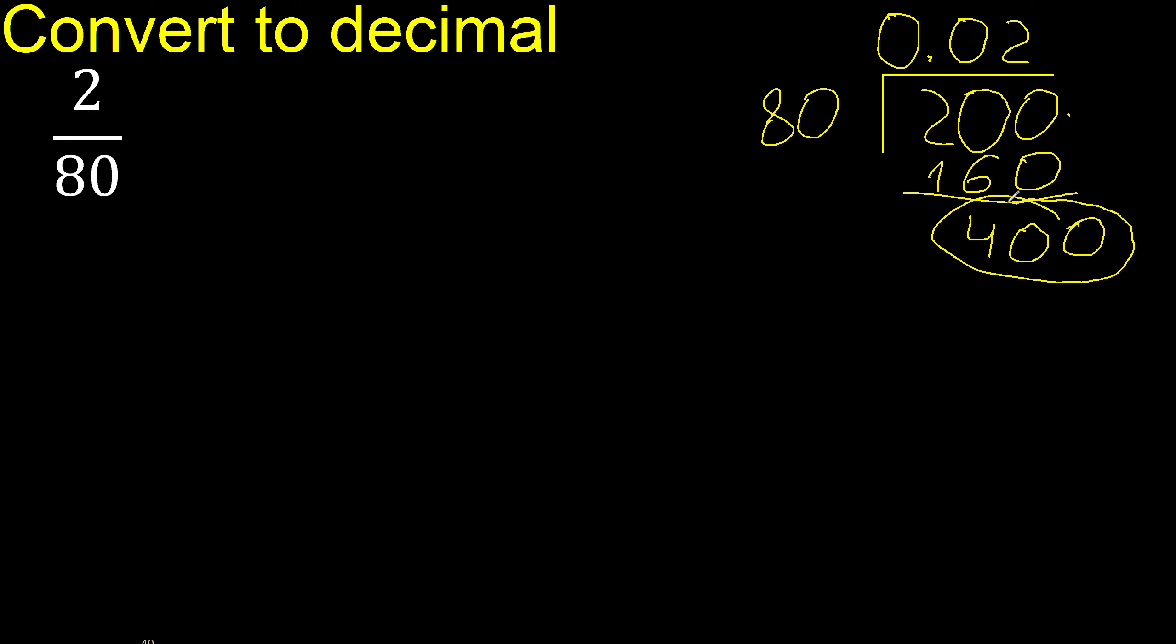400. 80 multiplied by what number? Multiplied by 5 is 400. Subtract is 0, 0 therefore finish.